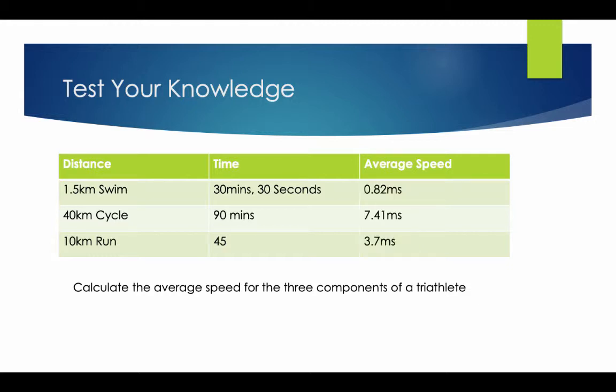Looking at the three different components: the swim would be 0.82, the cycle would be 7.41, and the run would be 3.7 meters per second.